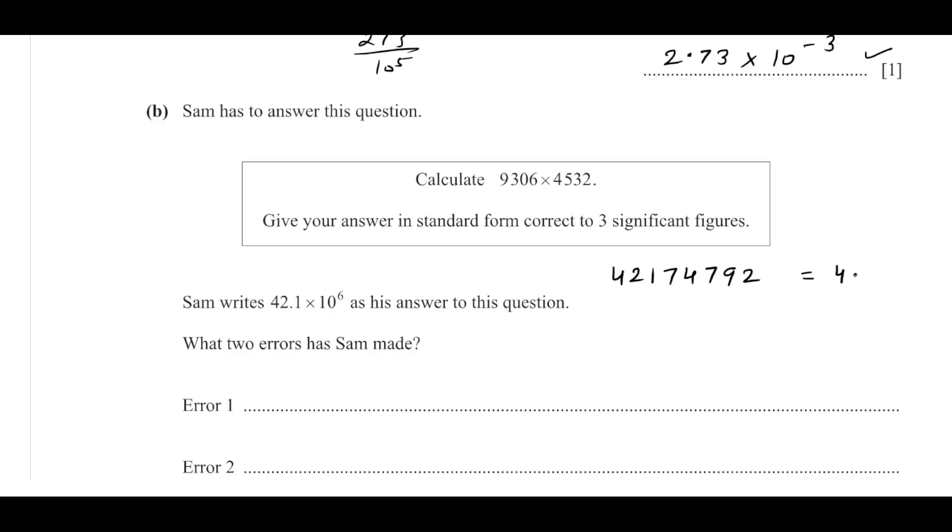So I will write this as 4.222 up to three significant figures. So this one will change to 2 as the next number is more than 5. So it is 4.22 times 10 to the power...